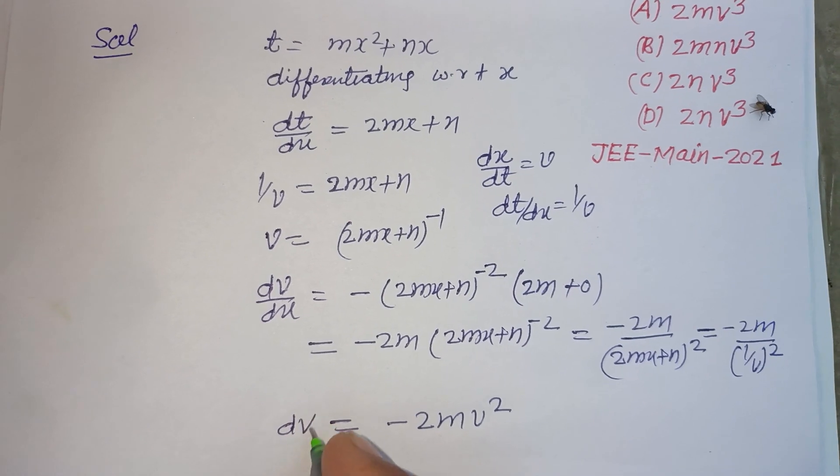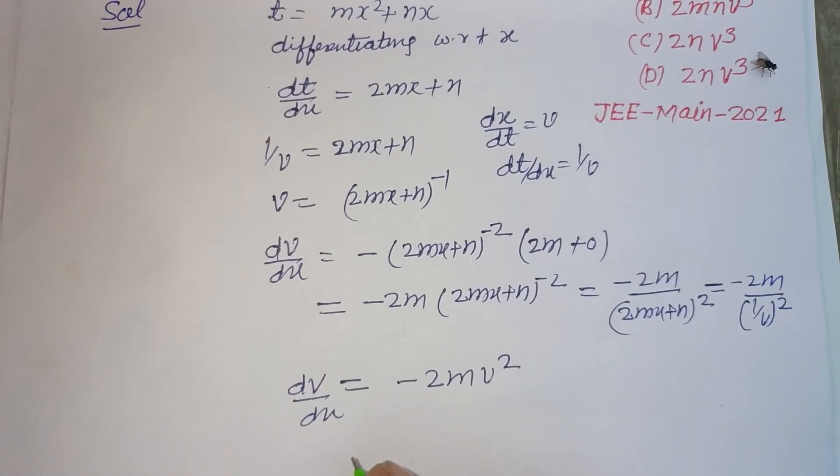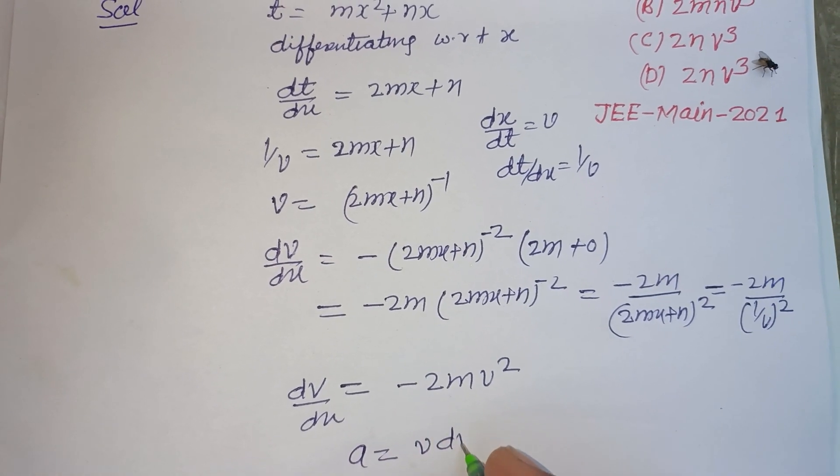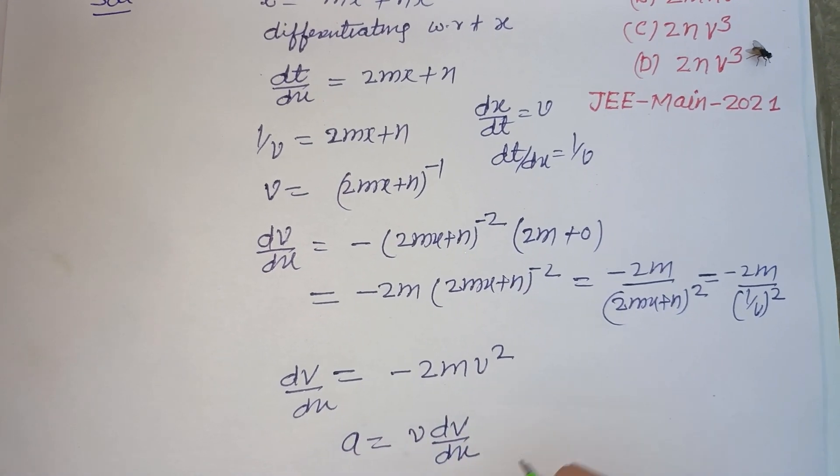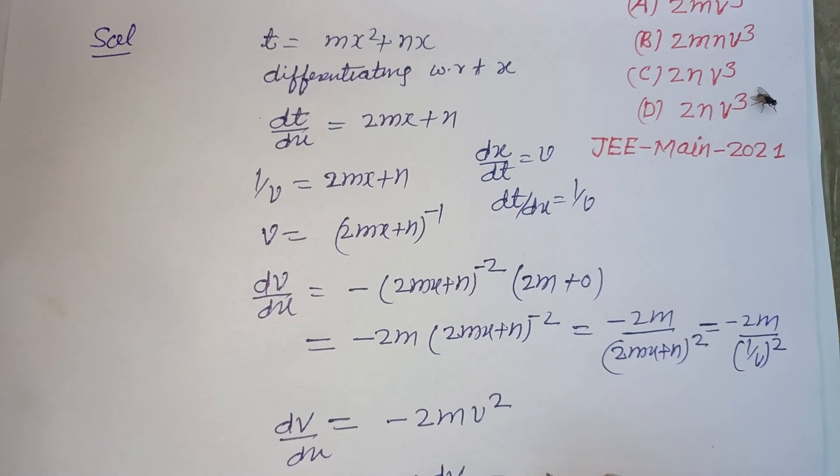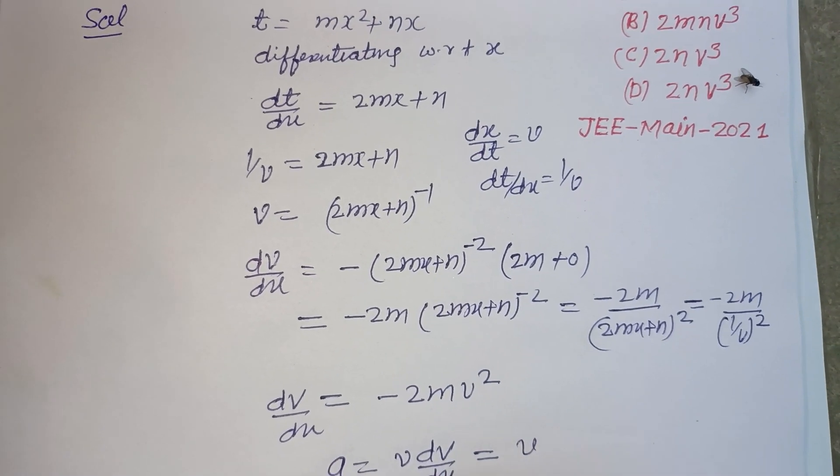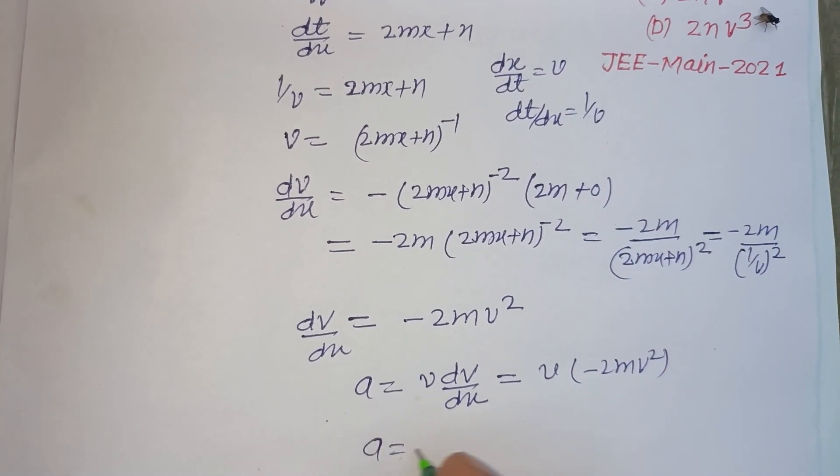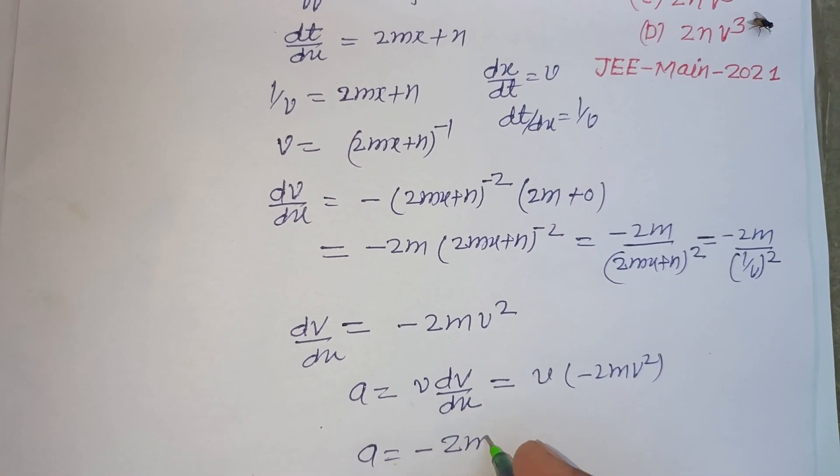dv over dx, here retardation is asked. So a equals, you know that v dv over dx. So v is v and dv over dx is minus 2m v squared. So a equals minus 2m v cubed.